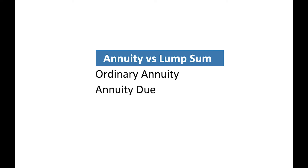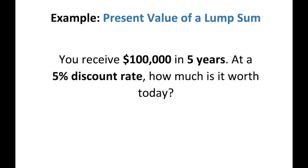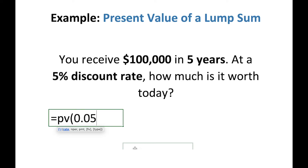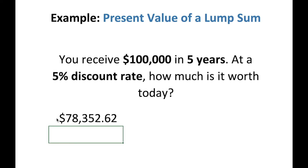Now that we've talked through the theory of the time value of money, let's go through four examples. Starting with the present value of a lump sum: you receive a lump sum of $100,000 in five years. At a discount rate of 5%, how much is it worth today? In Excel, we use the PV function. The rate is 5%, the number of periods is 5, there is no payment because this is not an annuity, the future value is 100,000, and the type we can leave blank. The result is approximately $78,000. So in other words, if we took $78,000 today and invested it at a 5% return, it would be worth $100,000 in five years.